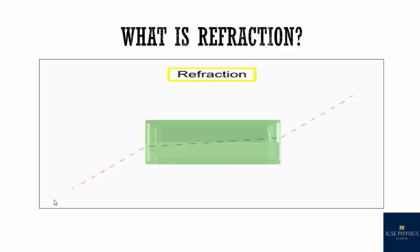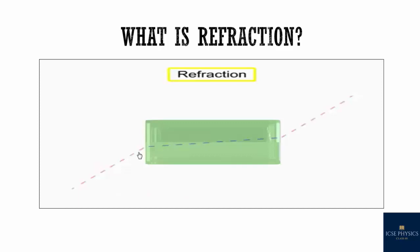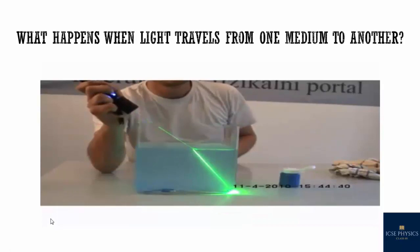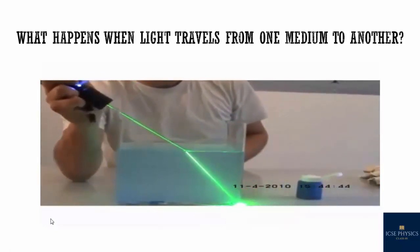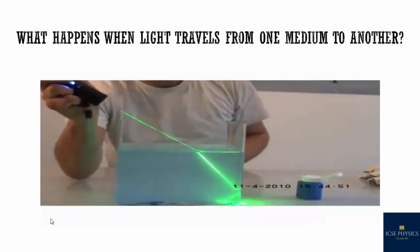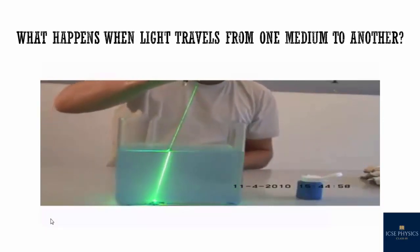Refraction is the change in direction of the path of light when it passes from one medium to another medium. The refraction of light is essentially a surface phenomenon — it occurs at the surface boundary of two mediums. At the boundary separating the two mediums, light suffers partial reflection and partial refraction. When light travels from one medium to another, a small part of it gets reflected in the same medium obeying the laws of reflection, and the rest is refracted through the other medium.